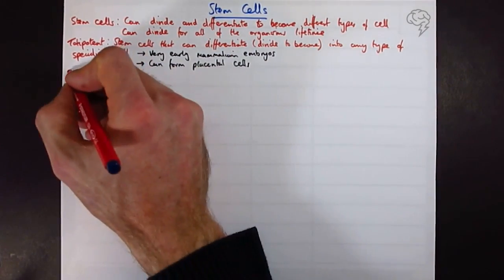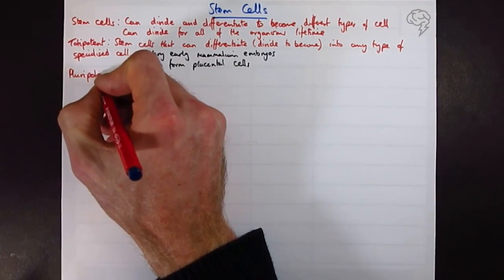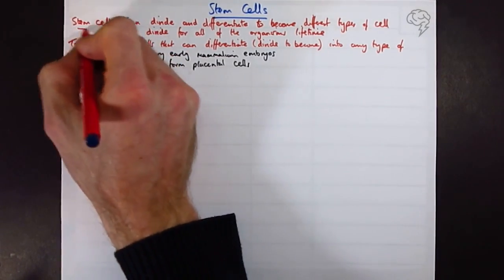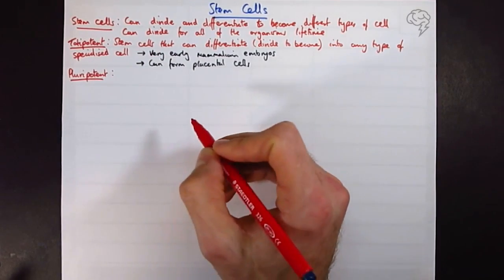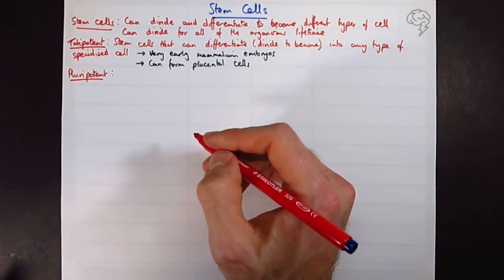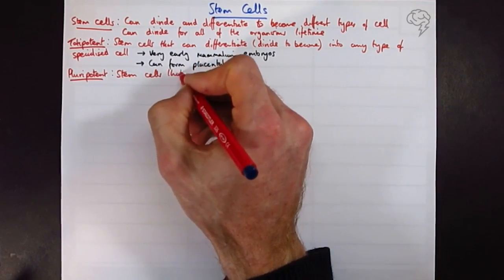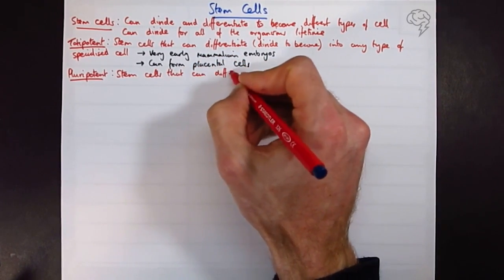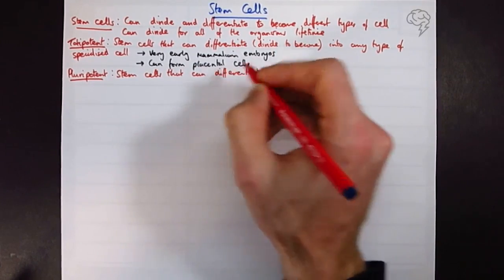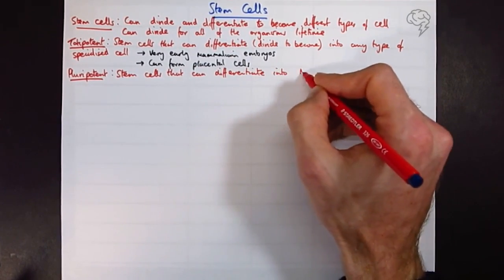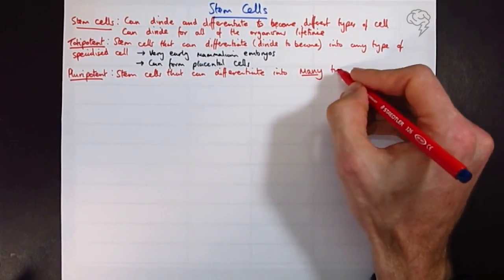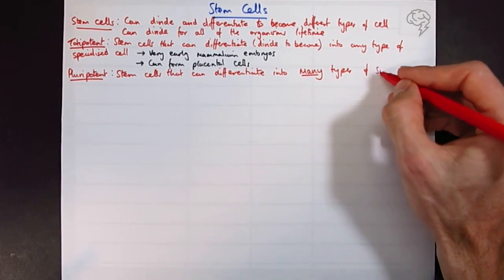Next up we've got pluripotent. Now maybe I'm going to underline these just to make them stand out. There's going to be a lot of red here. So pluripotent stem cells can differentiate into many types of cell or specialized cell.